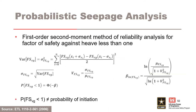The likelihood of heave can be evaluated using the first-order second-moment method of reliability analysis. First-order because it uses a first-order Taylor series expansion; second-moment because it uses the standard deviation. The Taylor series expansion of the performance function is performed about the expected value of random variables, retaining only first-order linear terms. Once beta is calculated, the probability of unsatisfactory performance — typically represented as a probability of a factor of safety less than 1 — can be calculated. This approach is commonly used to perform a probabilistic seepage analysis using vertical exit gradients obtained from software such as SeepW.